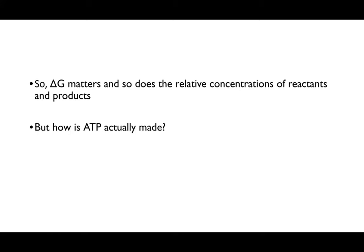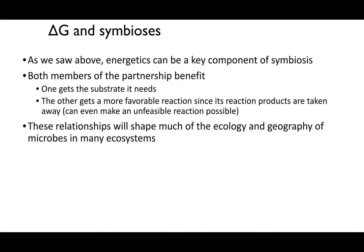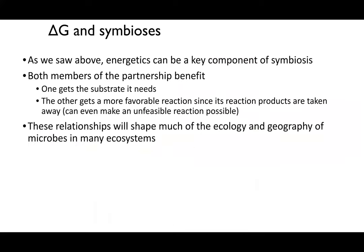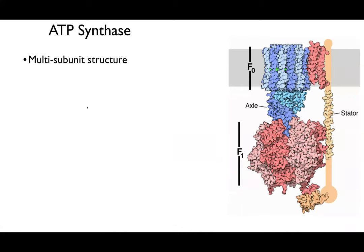Delta G matters, and so do relative concentrations of reactants. But the key question is: how do we make ATP? We have an organism taking in something, doing some stuff—and the answer varies slightly depending on the domain, whether archaea, bacteria, or eukaryotes.